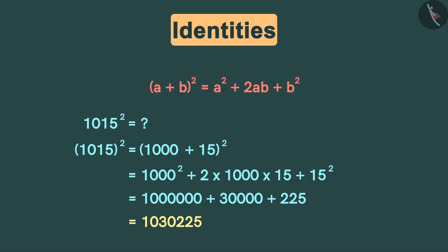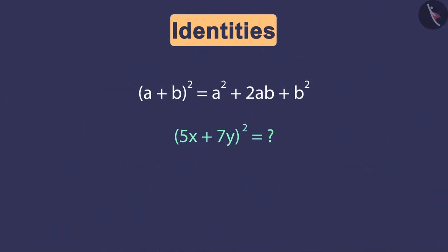So we have seen that by applying this identity one can easily find the square of any number. Let's move on to the next example.